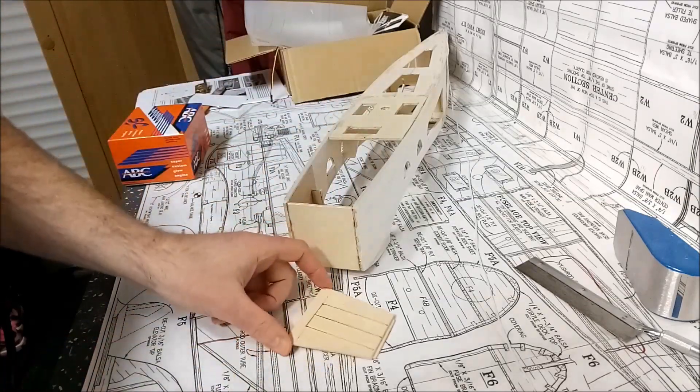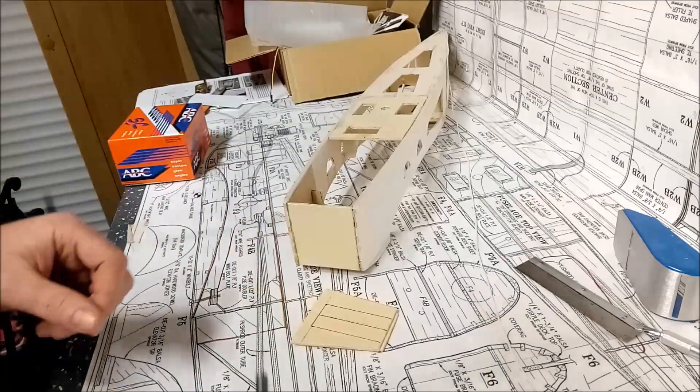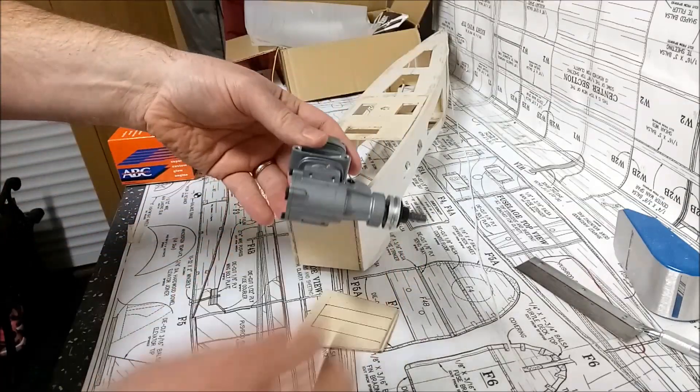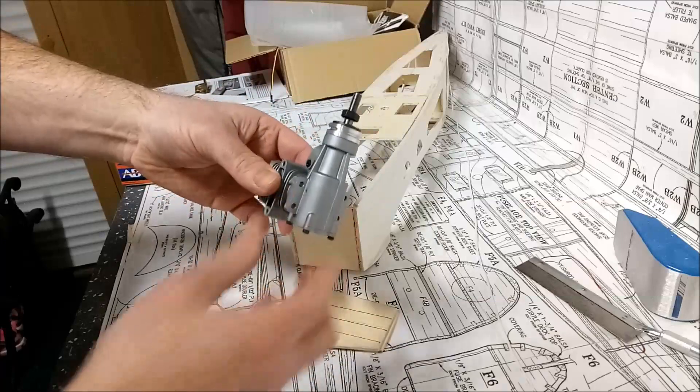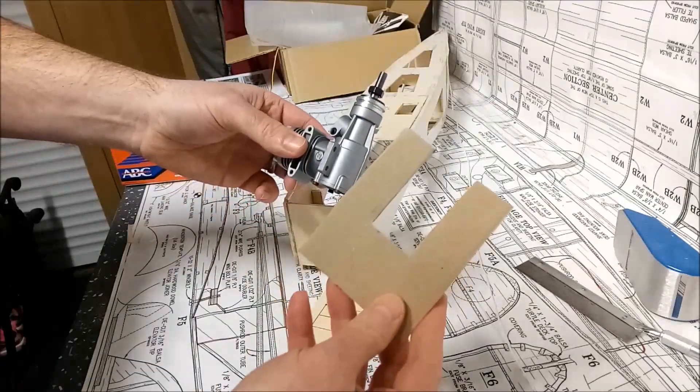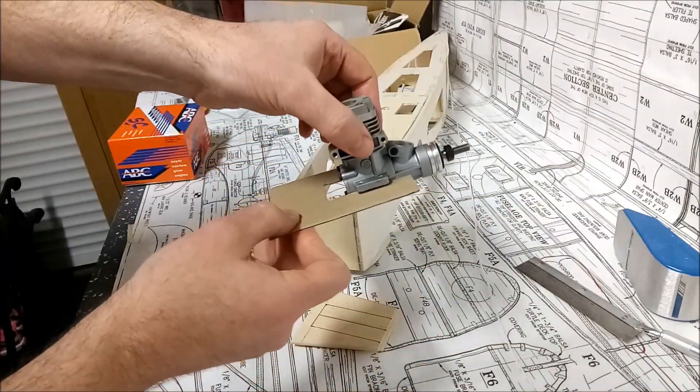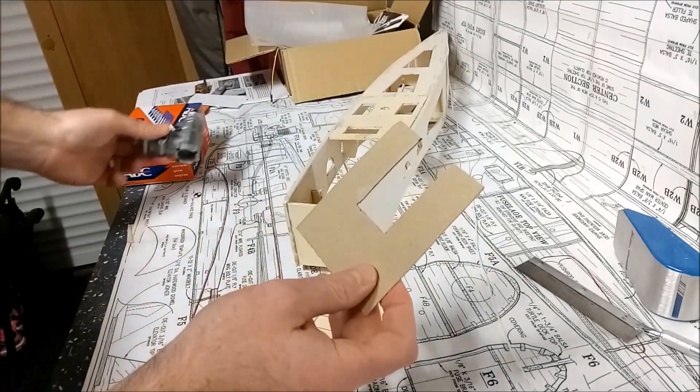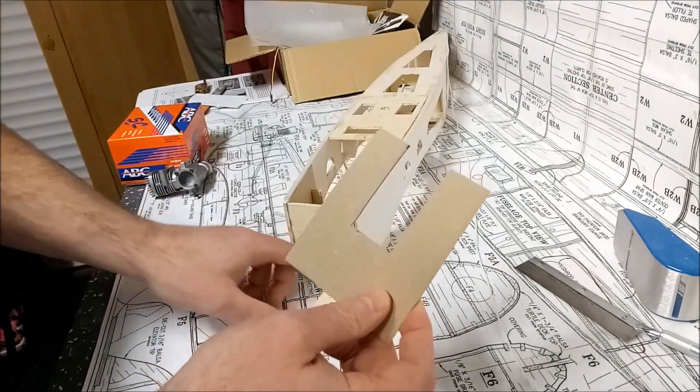So the engine that I've chosen for this airplane is a Super Custom 25A aero engine, and what I've had to do in order to get it sized for the mount is cut out a cardboard template that it will sit into, and that gives me the template in which to mark the engine mount.